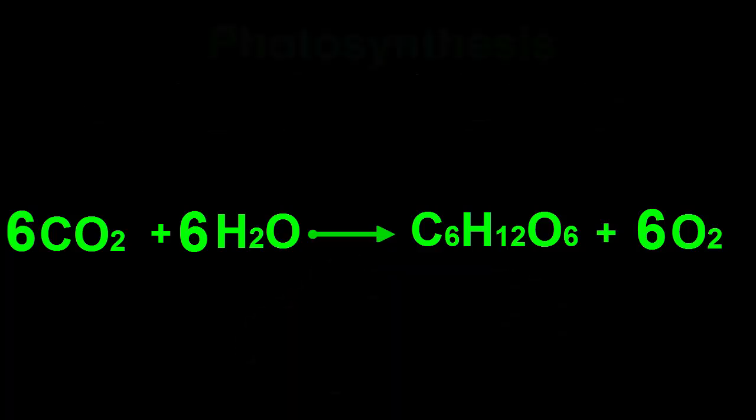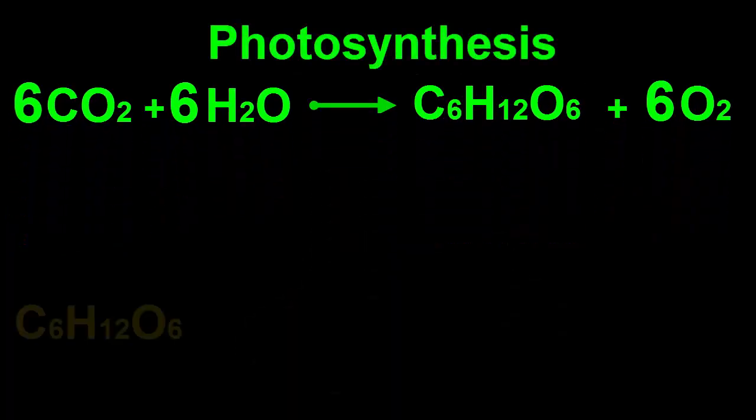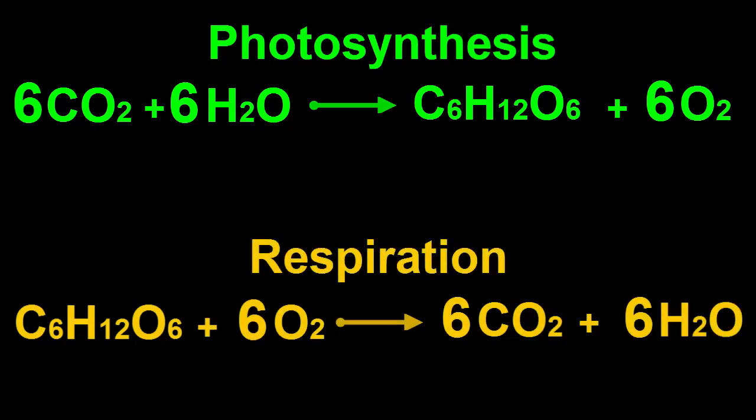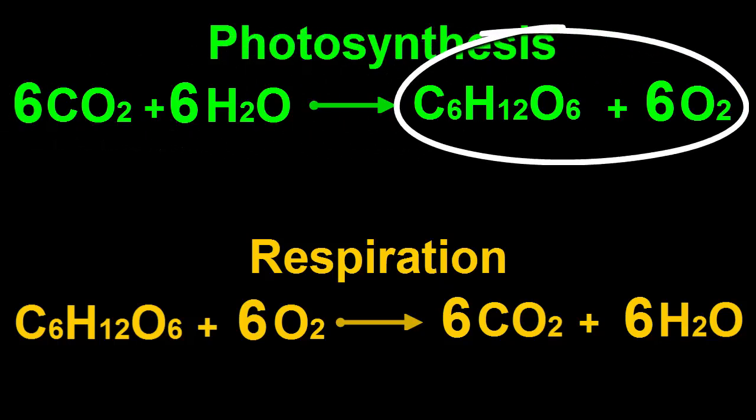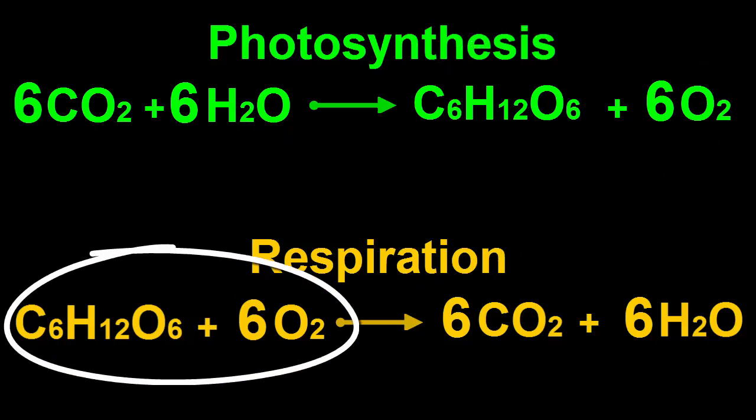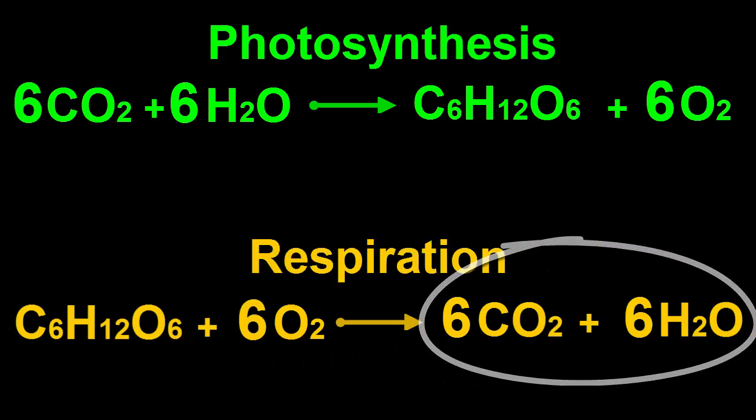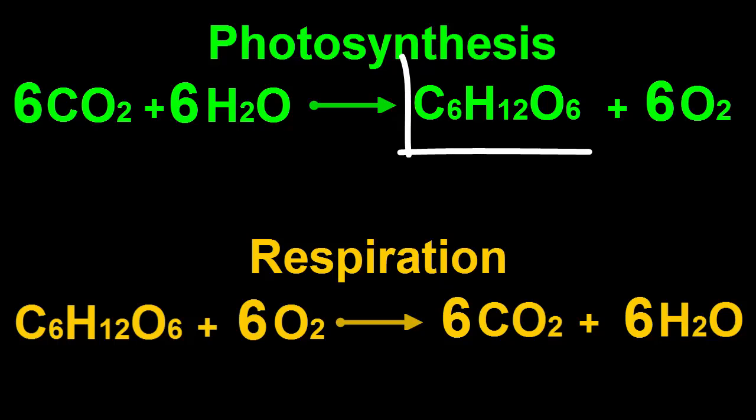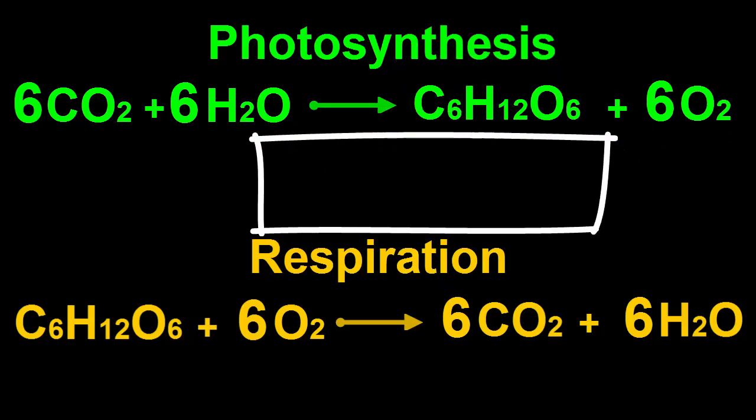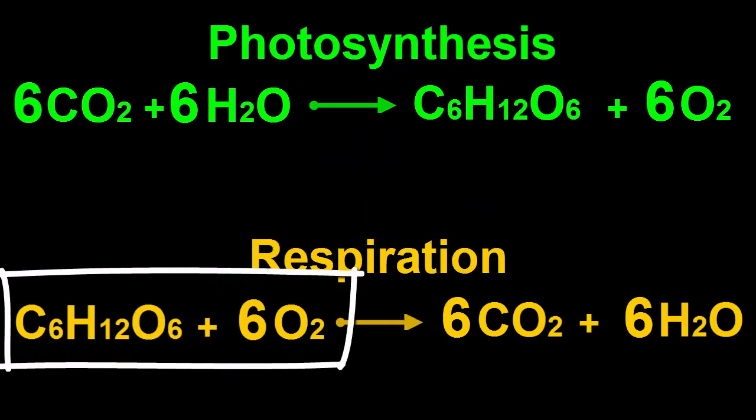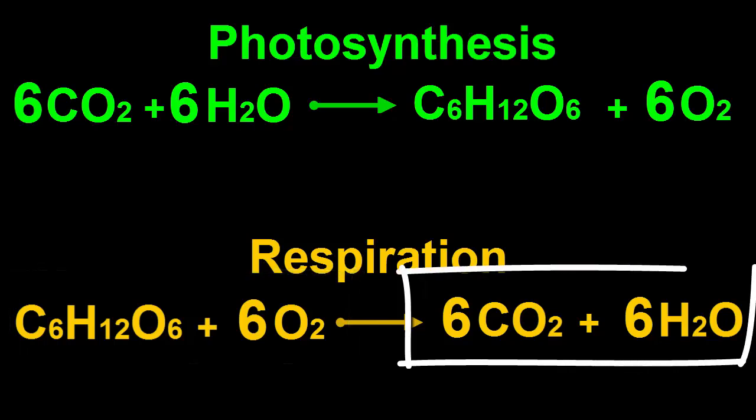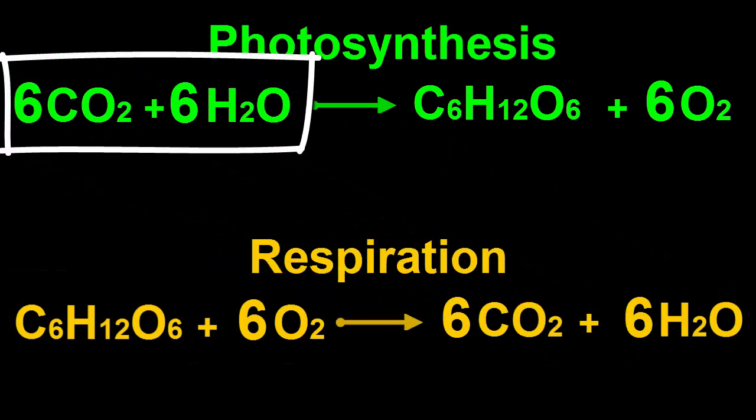You can see that this photosynthesis equation is the same as the respiration equation, but written in reverse. Photosynthesis uses carbon dioxide and water to build glucose and release oxygen. Photosynthesis makes what respiration uses, and respiration makes what photosynthesis uses. Neat.